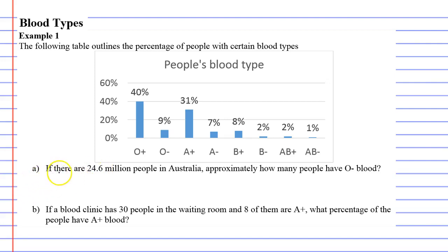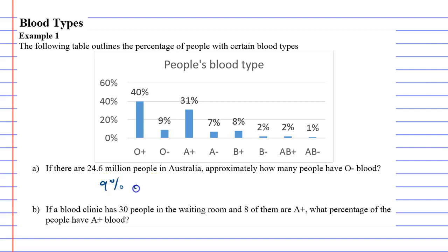Question A: If there are 24.6 million people in Australia, approximately how many have O negative blood? Nine percent of people have O negative blood, so we need to find nine percent of the total population of Australia.